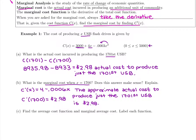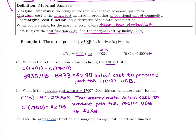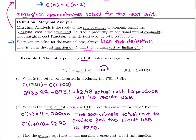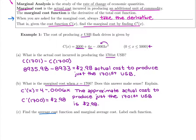The last part says to find the average cost function and the marginal average cost. We have actual cost: C(N) minus C(N−1). Marginal means take the derivative. Now we add average cost. The formula: C-bar of X equals the total cost divided by X — take the total and divide by the number of units. This is another key formula to know in this section.